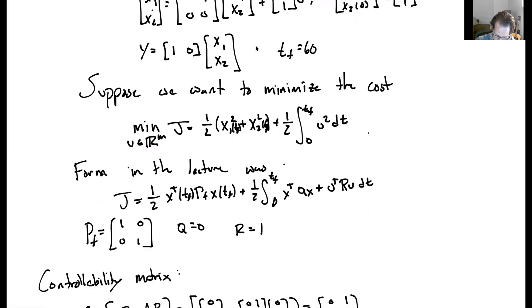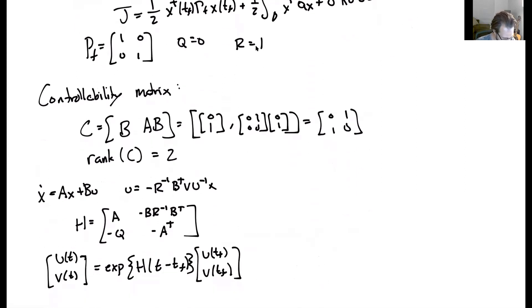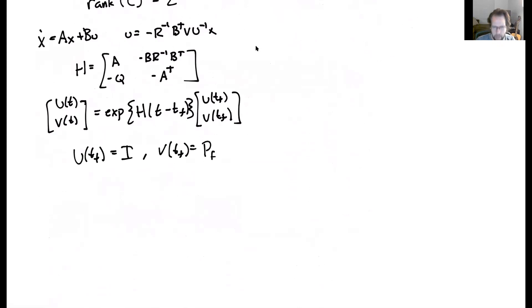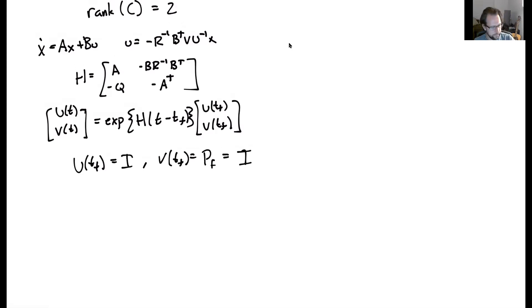We set U(Tf) equal to the identity matrix and V(Tf) equal to Pf, which we found from the cost function — that is also the identity matrix. Now we have everything we need to solve this problem. Let's go into MATLAB and program it to find the solution.